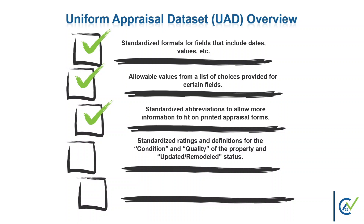The condition and quality ratings must be based on a holistic view of the property and any improvements. When selecting these ratings, an appraiser must consider all improvements to determine an overall condition and quality rating, and should select the rating that best reflects the property as a whole and in its entirety. It is important to remember that sales can have the same characteristics as the subject property — like quality of construction, condition, view, or location — and still require an adjustment. There can also be variations where one property is superior or inferior to the subject in quality or condition, but not to the extent that a different rating is achieved.